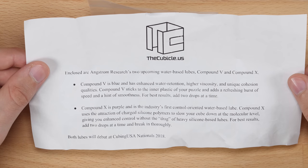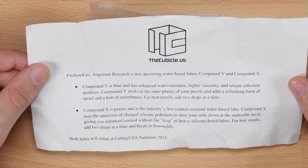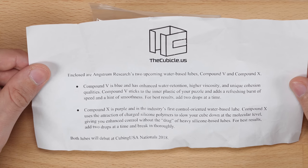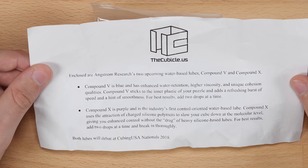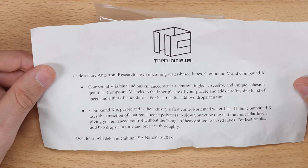Enclosed are Angstrom Research's two upcoming water-based lubes, Compound 5 and Compound 10. Compound 5 is blue and has enhanced water retention, higher viscosity, and unique cohesion qualities. Compound 5 sticks to the inner plastic of your puzzle and adds a refreshing burst of speed and a hint of smoothness. For the best results, add two drops at a time.